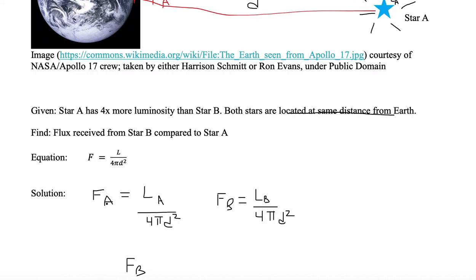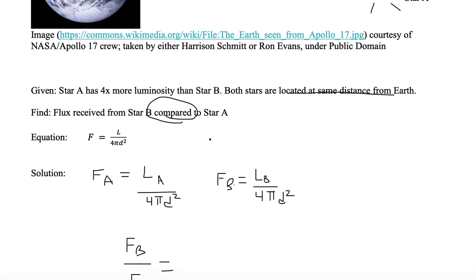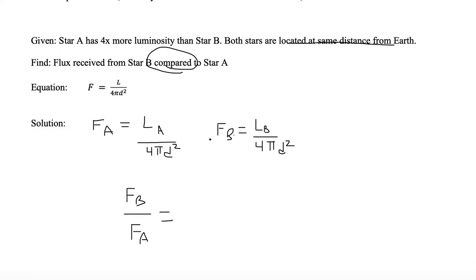The flux of A is equal to the luminosity of A divided by four pi d squared, and the flux of B is the luminosity of B divided by four pi d squared. We want to see the flux received from star B compared to star A. Whenever we see the word 'compared,' we generally want a ratio. So we're going to look at the flux of B divided by the flux of A.